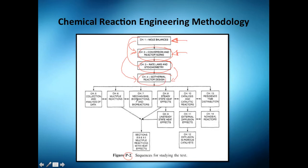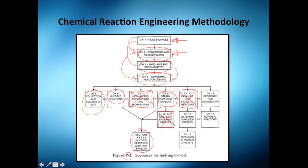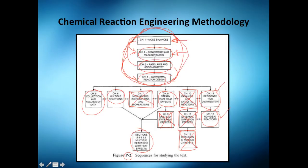Once you understand how to design isothermal reactors, you will be able to collect and analyze data. Then also multiple reactions — we're not going to see that much of that. Steady state heat effects, yes, of course — non-isothermal reactions. Then chapter 9 on non-steady state heat effects, maybe a little bit. Chapter 10: catalysis and catalytic reactors, just a little bit. External diffusion effects — also just an introduction or overview. Residence time distribution, a little bit. And non-ideal reactors, also. But the core, the central part of the course, is this section.